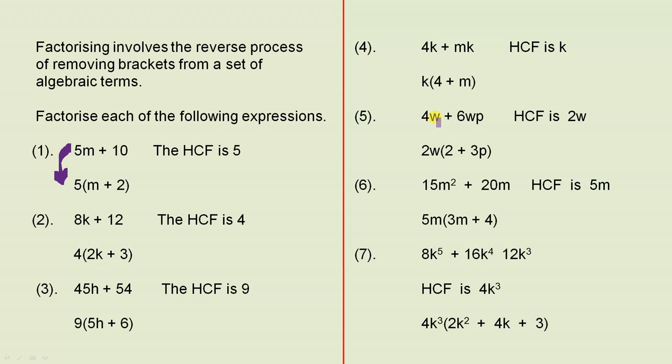Now here, this is a little bit different because we have 4w and 6wp. The HCF is 2w, because 2 divides into 4 and into 6, and w divides into each of the terms. So that's why the HCF is 2w. Put the 2w outside. 2w times what gives you 4w? It's 2. 2w times what gives you 6wp? 3p. That's the answer.